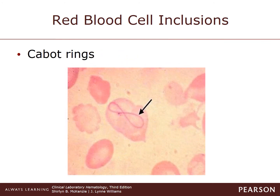Cabot rings appear as a figure-eight ring within the cell. They are thought to be composed of microtubules of the mitotic spindle and can stain reddish-violet on the Wright stain. This is seen usually in severe types of anemia or dyserythropoiesis.